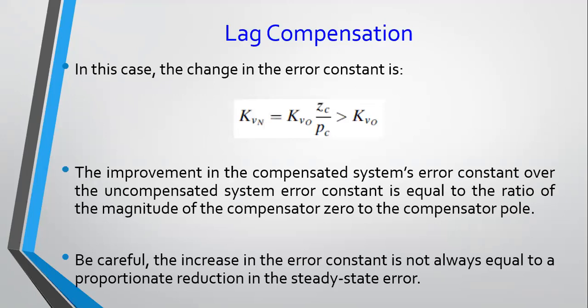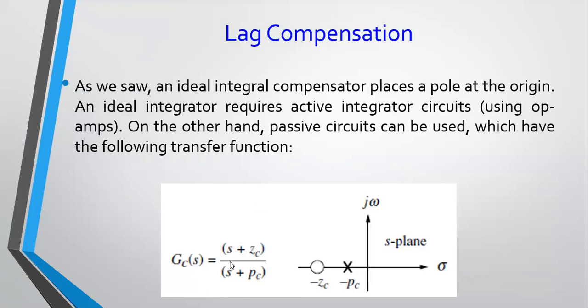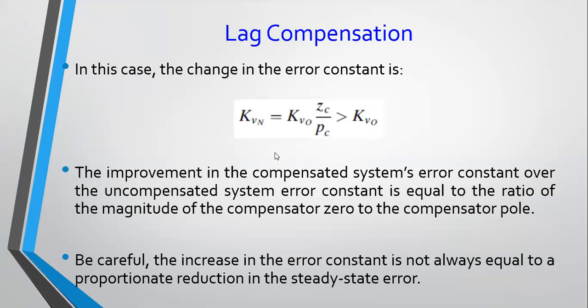The change in error constant is going to be your previous error constant — we call that KB_0 — multiplied by this ratio Zc over Pc when you set S to zero. It means your error constant has increased from its base value. Of course, if you increase your error constant by a certain amount, since your steady-state error is typically inversely proportional to the error constant, you expect your error to reduce.